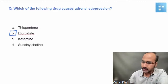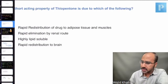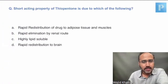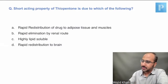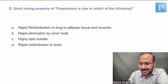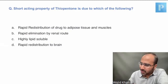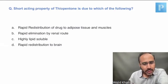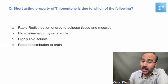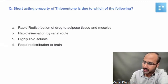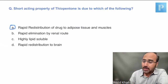Coming to the second question: 'The short-acting property of thiopentone is due to which of the following?' The options were rapid redistribution, rapid elimination, highly lipid soluble, or rapid redistribution to the brain. Thiopentone is regarded as an ultra-short-acting barbiturate because it has rapid redistribution.